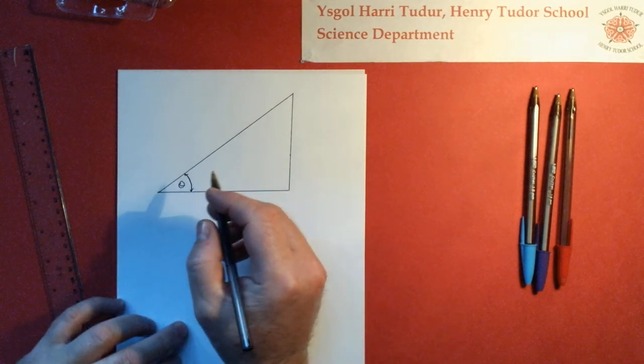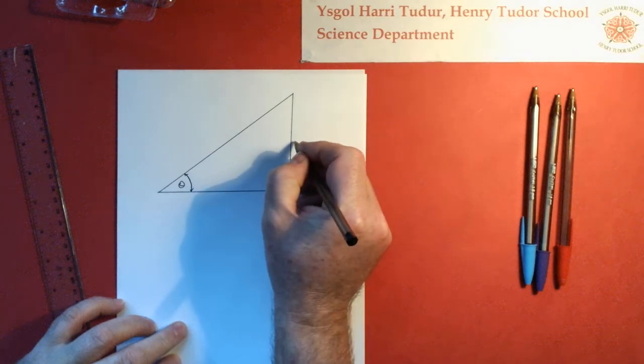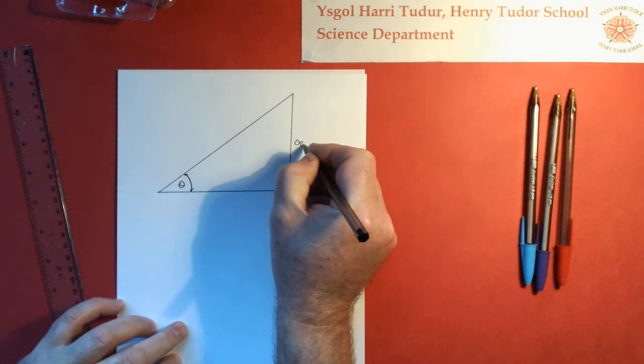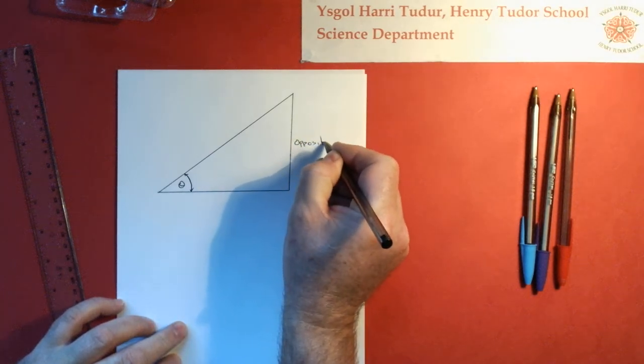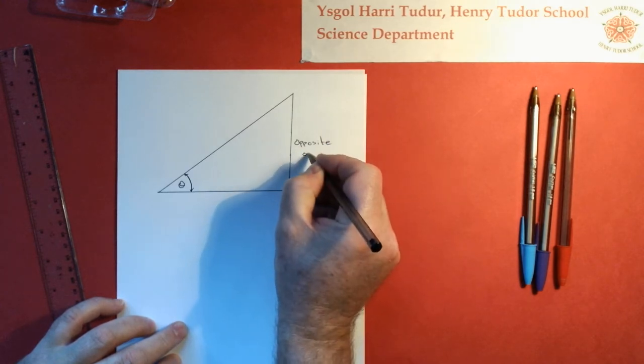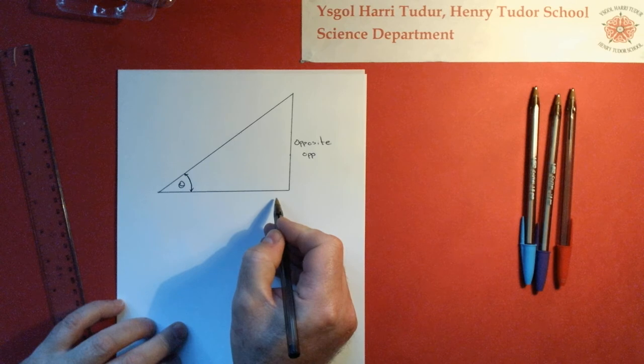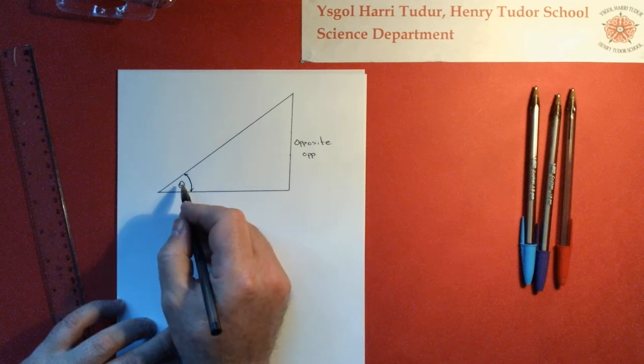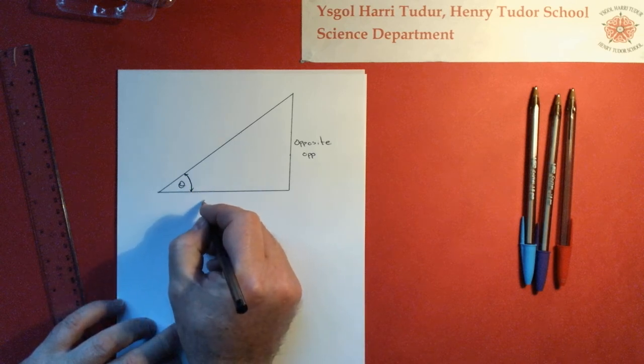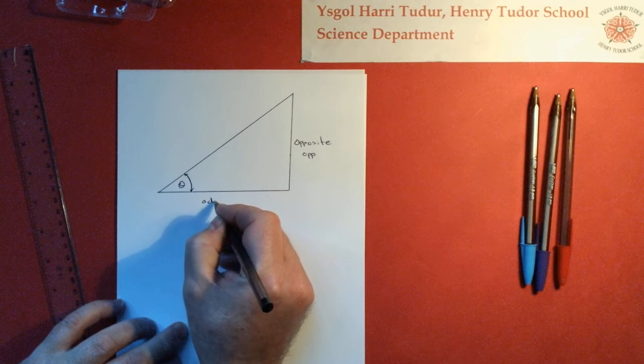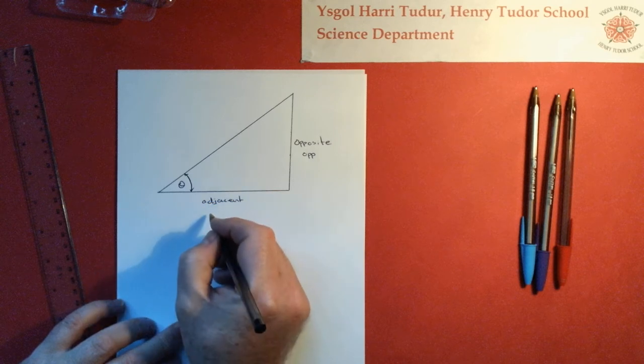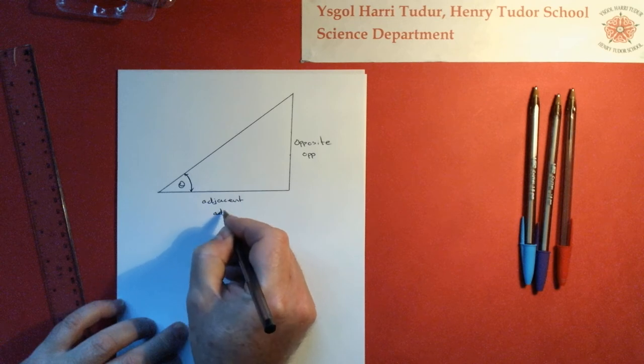Well, the easy ones to remember are the opposite one, so that's our opposite side opposite to the angle, and we shorten that to OP. And this horizontal is adjacent to the angle, it's next to it, so we call that the adjacent and we shorten that to ADJ.